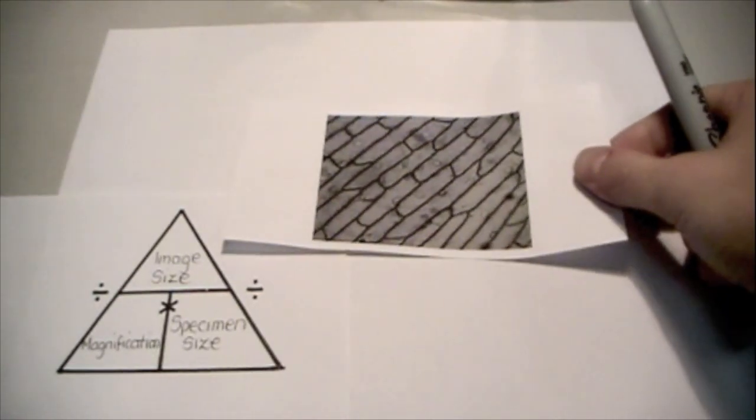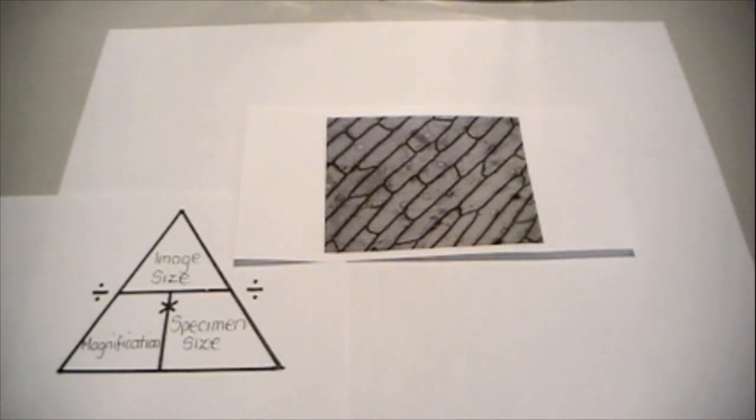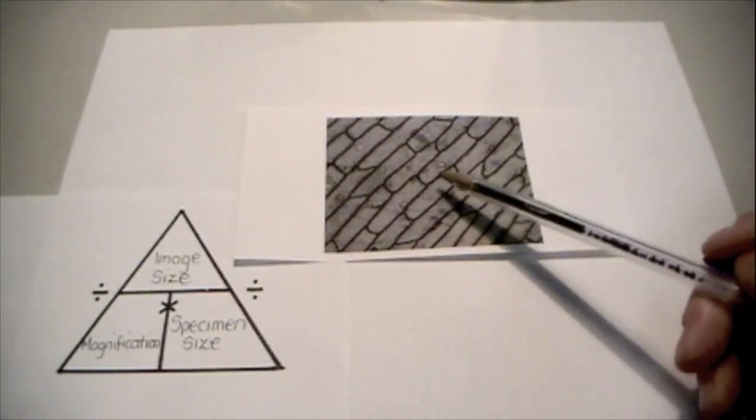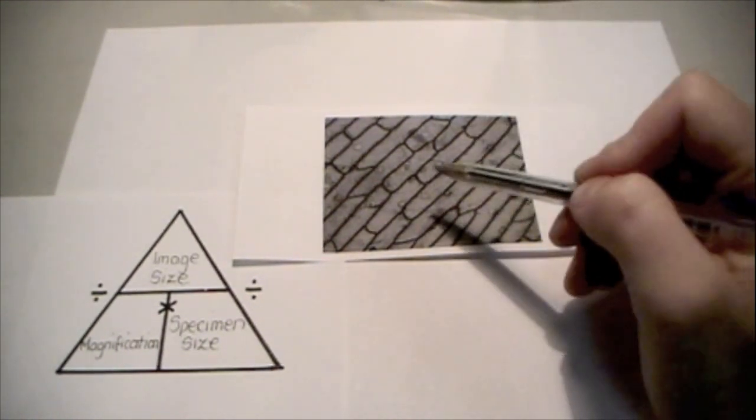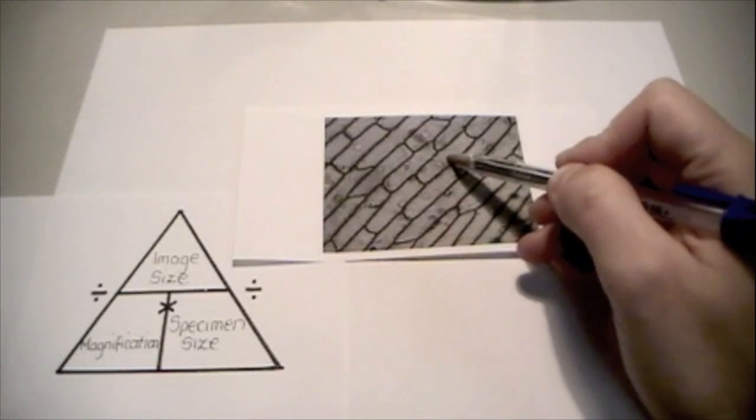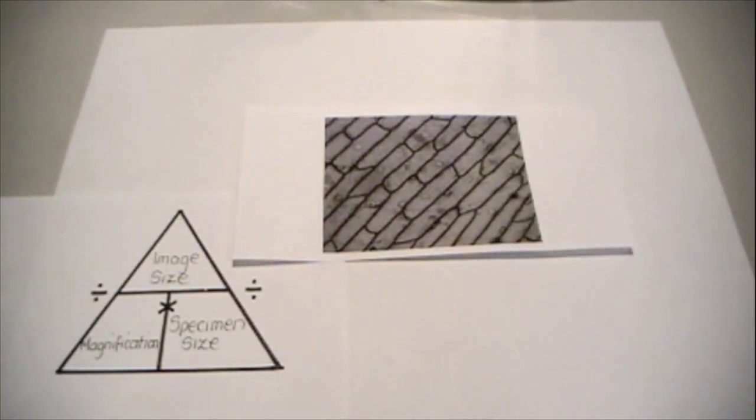For example, let's start with these cells. These are onion cells. You can see here's a cell here and a cell here and a cell here. So we may be asked to find the actual length of that cell.